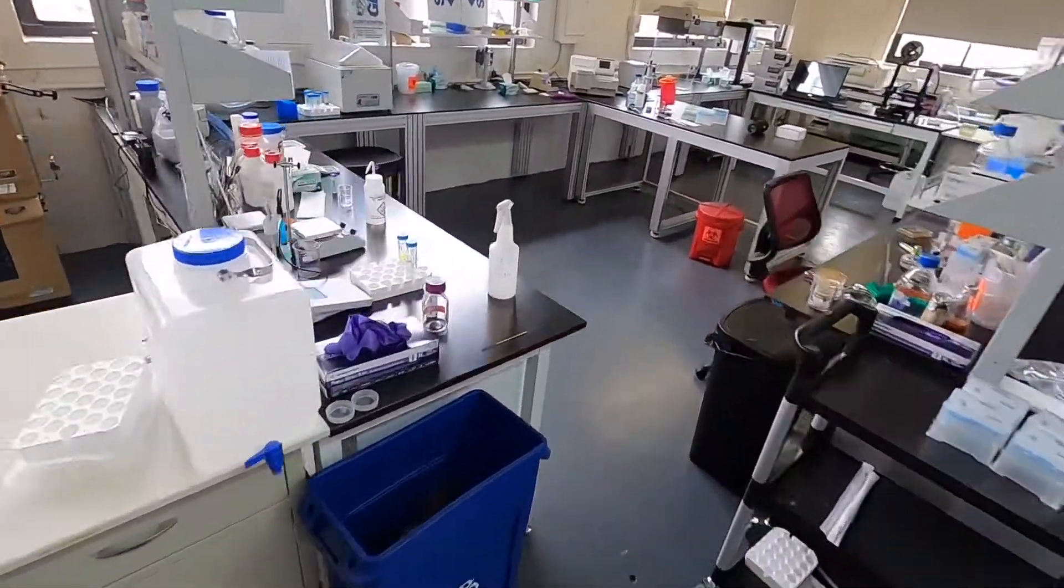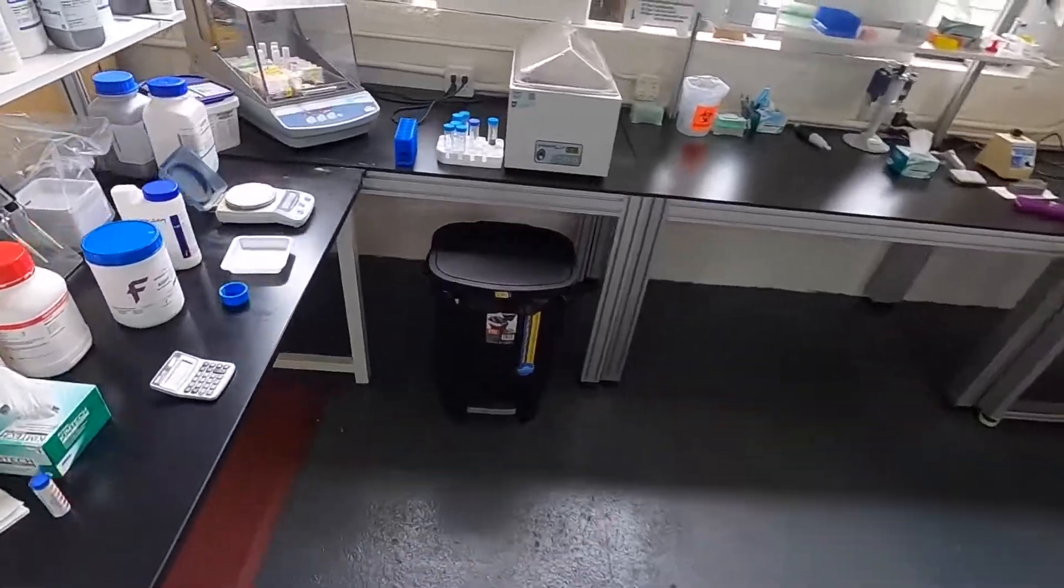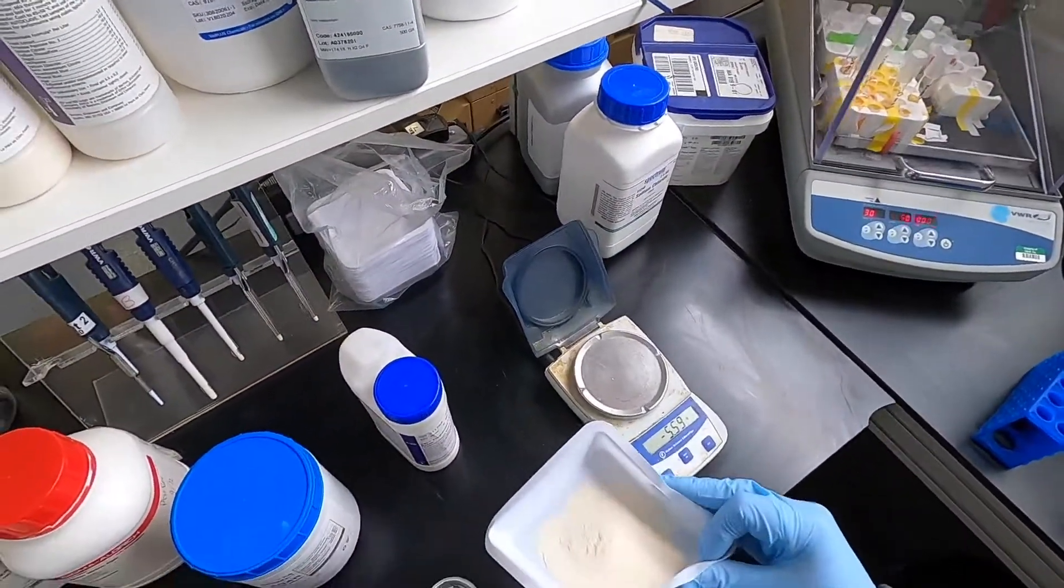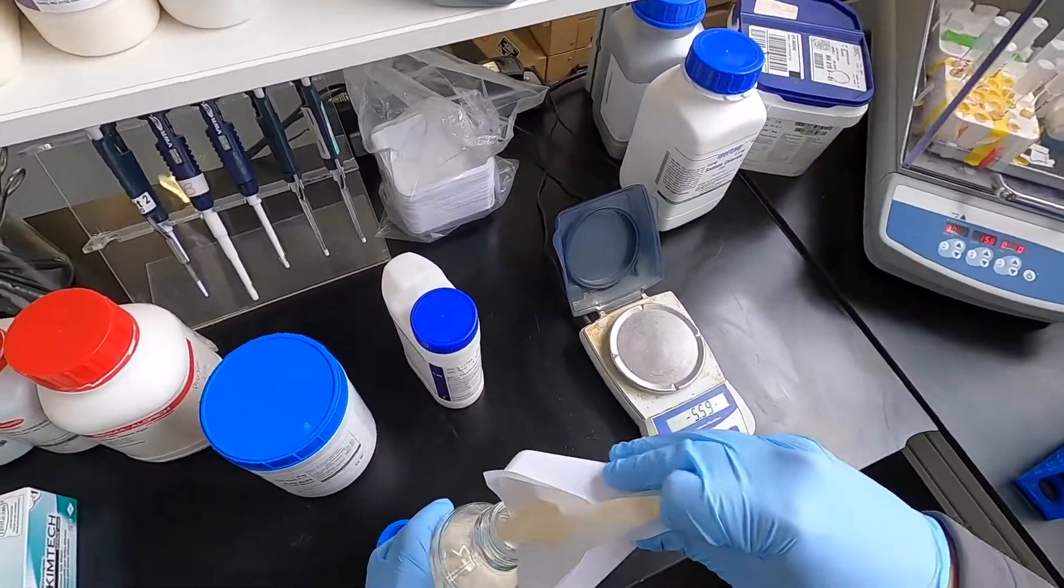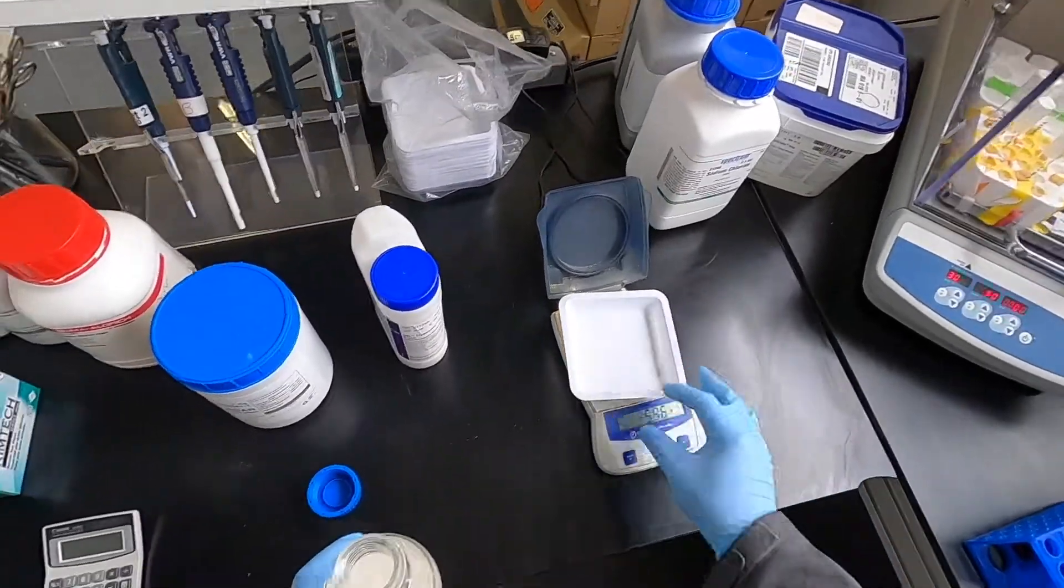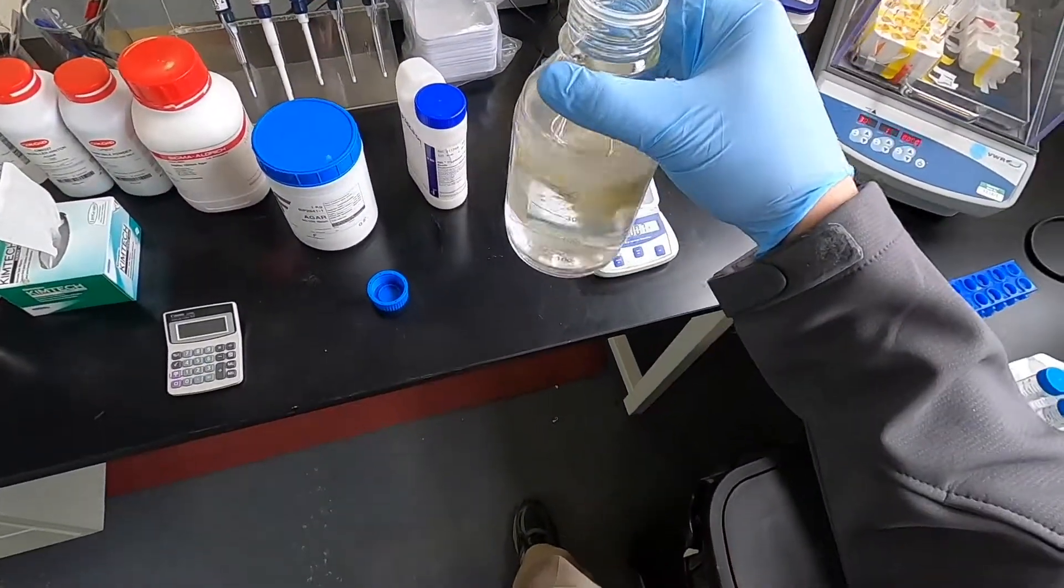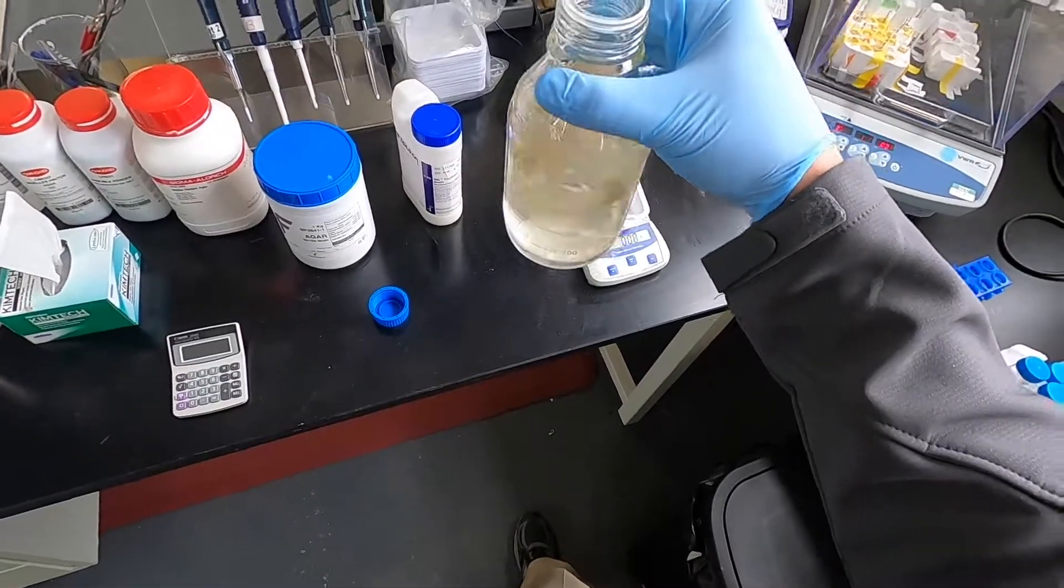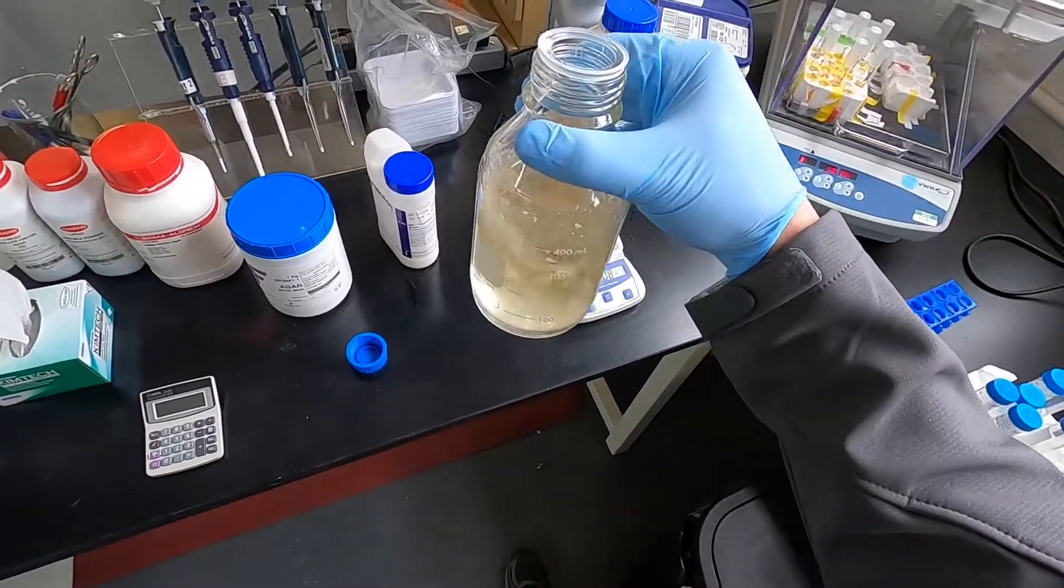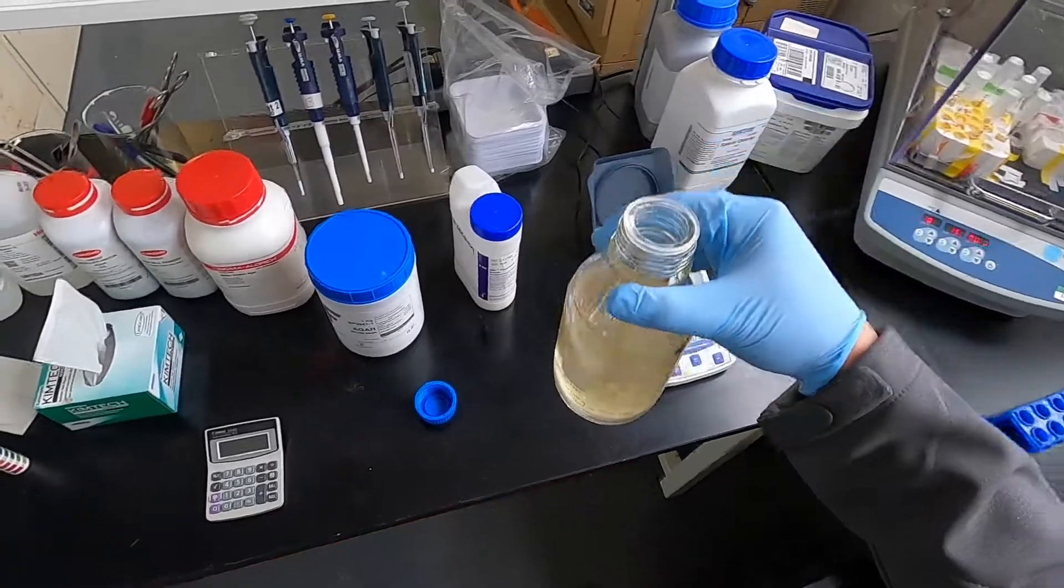So we'll start off by putting in about half volume of deionized water, then we will put in the broth. Yes, it makes chunks but they're not dry and stuck to the bottom, so when it autoclaves it won't actually burn.